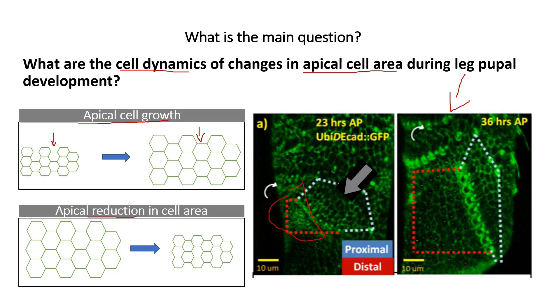These cells were much bigger, and here they become smaller in depth. What is the development? What are the mechanisms? How does this take place?